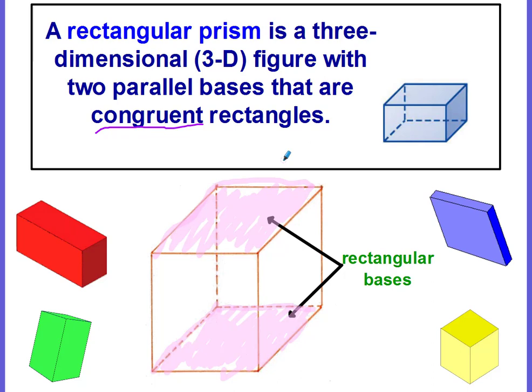Now we in sixth grade are only going to focus on rectangular prisms, those that have rectangular bases. There are other types of prisms and they're named for the shape of their base. For example, there are triangular prisms and the shape of their base would be a triangle. But you will learn about those in seventh grade.